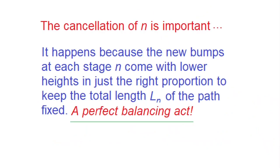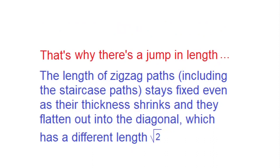Being able to cancel the n in this calculation is very important. It's worth mentioning or highlighting. What it says is that as we add new bumps in each stage n, we also reduce their height in just the right proportion to keep the total length of the path fixed at every stage. It's a perfect balancing act. And it explains why there is a jump at the end in the length of the zigzag path. They all stay the same, no matter how many times we refine them, except at the very end, at the very end, where the length of the diagonal is a distinctly different number, square root of 2.